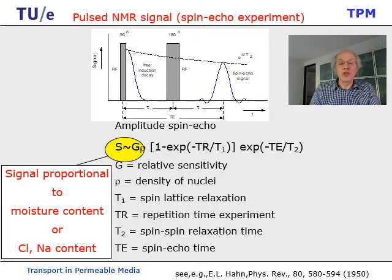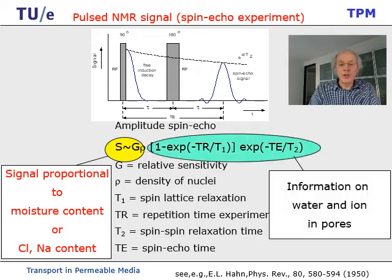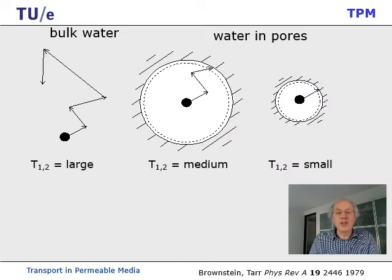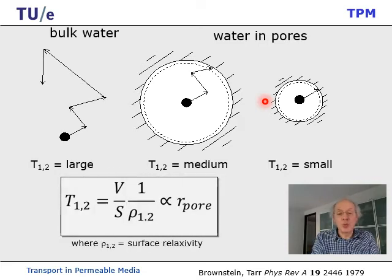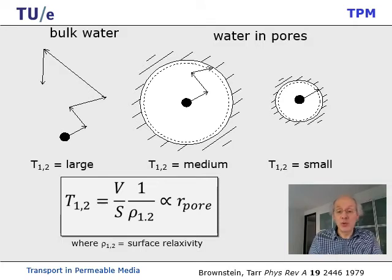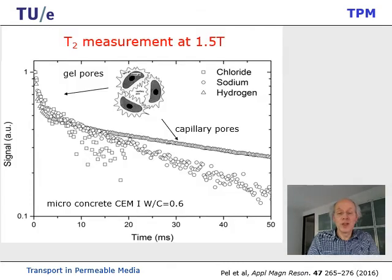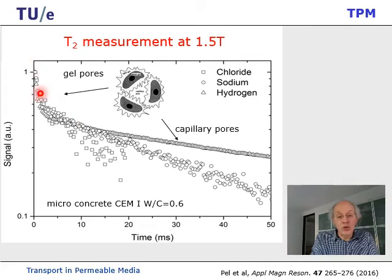Beyond signal density, NMR also provides relaxation information, which gives us information about pore size and thereby the structure of our cement. In an NMR experiment, for bulk water there is no interaction with the wall and relaxation is quite slow — the T2 is very large. With small pores, there is very fast relaxation due to interaction with the walls. It has been shown that this relaxation time is proportional to the pore size. So by NMR we can also probe pore size and structure development as a function of time. Looking at the relaxation as a function of various ions, we always see a double exponential decay, showing structural information for hydrogen, sodium, and chloride.